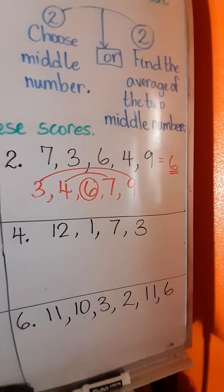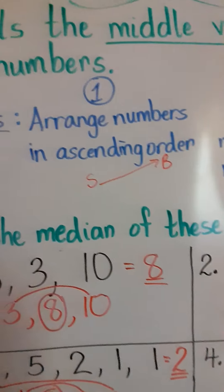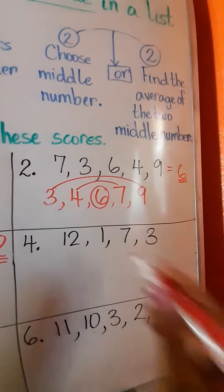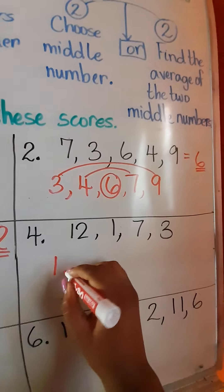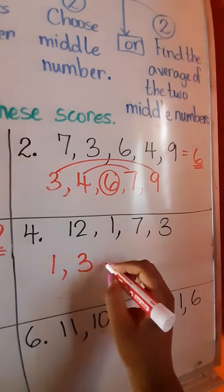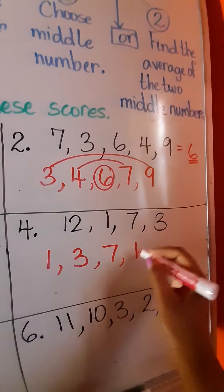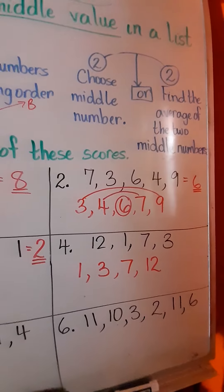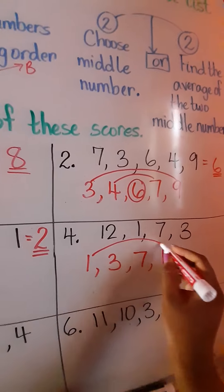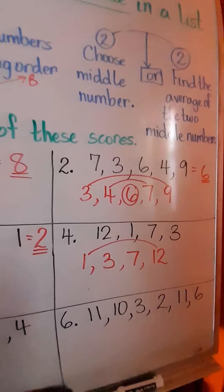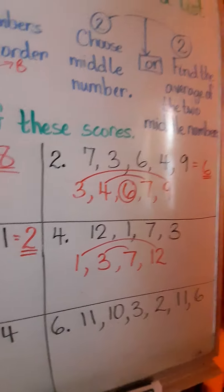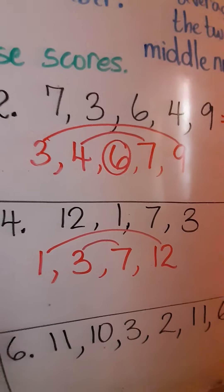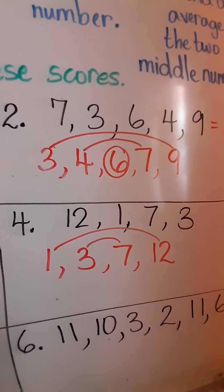Let's move to number 4. The first step is to arrange the numbers in ascending order. The smallest number is 1, then 3, then 7, then 12. Now we bridge: 1 and 12 will bridge, and 3 and 7 will bridge. But that means we have no middle number. So what do we do?